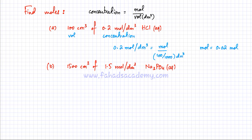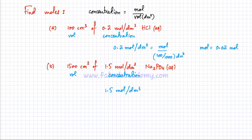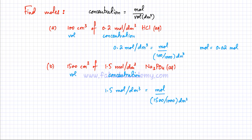In the next example, I have 1500 cm³ of sodium phosphate solution at a concentration of 1.5 mol/dm³ — find the moles. Setting up: 1.5 = moles / (1500/1000). Solving: moles = 1.5 × 1.5 = 2.25 moles of sodium phosphate.